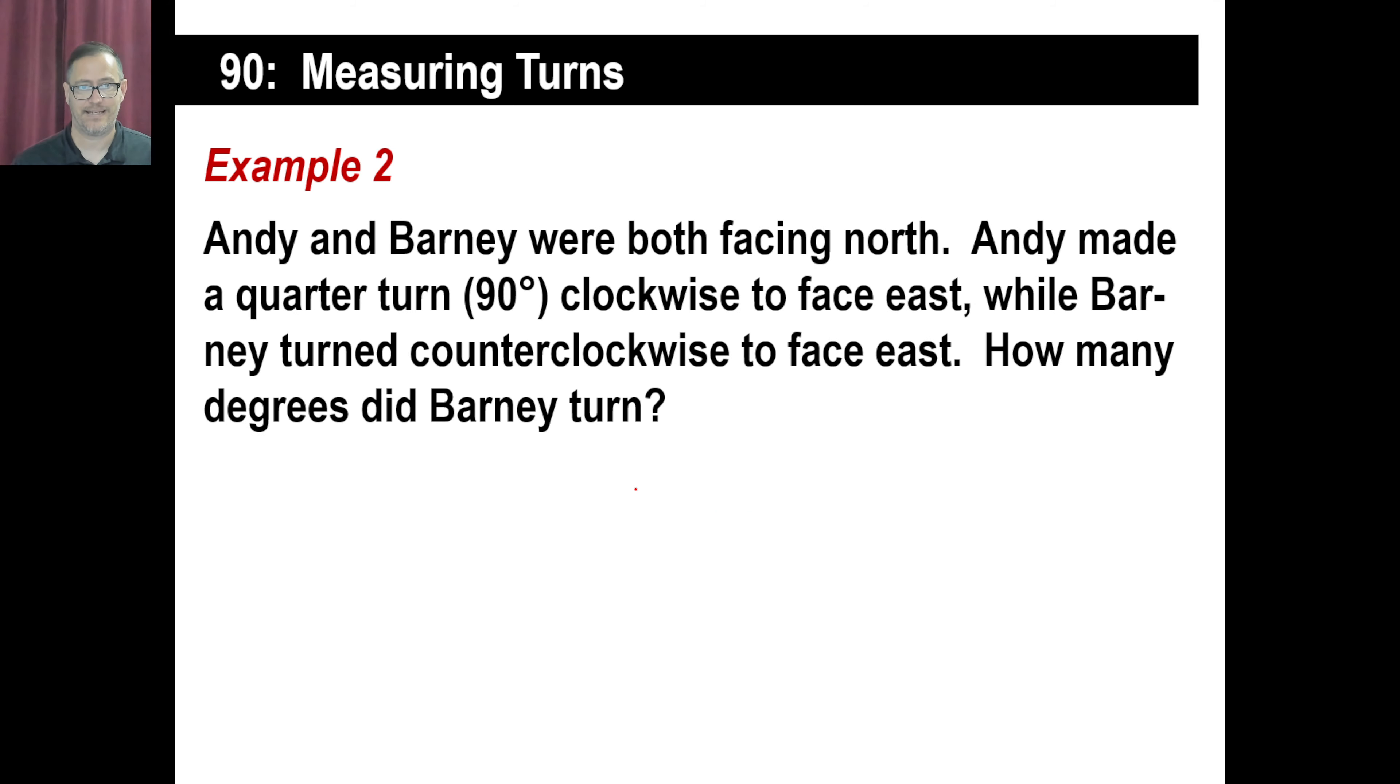Here's another one. Andy and Barney were both facing north. Andy made a quarter turn clockwise to face east, while Barney turned counterclockwise to face east. How many degrees did Barney turn? So in other words, these guys are both facing north, right? Andy made a quarter turn this way to face east. In other words, that's 90 degrees.